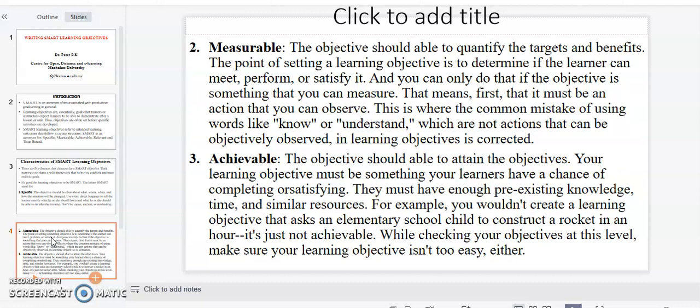Achievable: The objective should be able to attain the objectives. Your learning objective must be something your learners have a chance of completing or satisfying. They must have enough pre-existing knowledge, time, and similar resources.